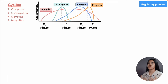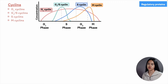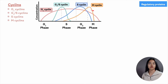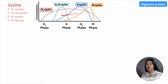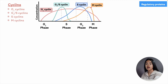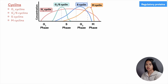Each cyclin is linked to a certain phase or transition in the cell cycle and influences the activities that take place during that phase. For example, M cyclin encourages M phase activities, including the breakdown of the nuclear envelope. The levels of the various cyclins change significantly throughout the cell cycle — the cyclin associated with each phase increases significantly during the period where it's required.